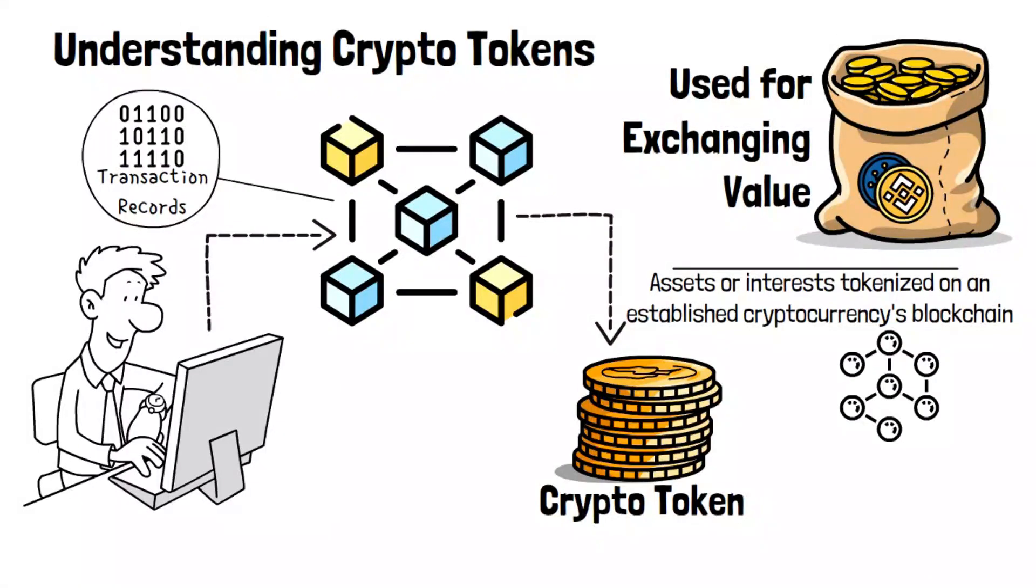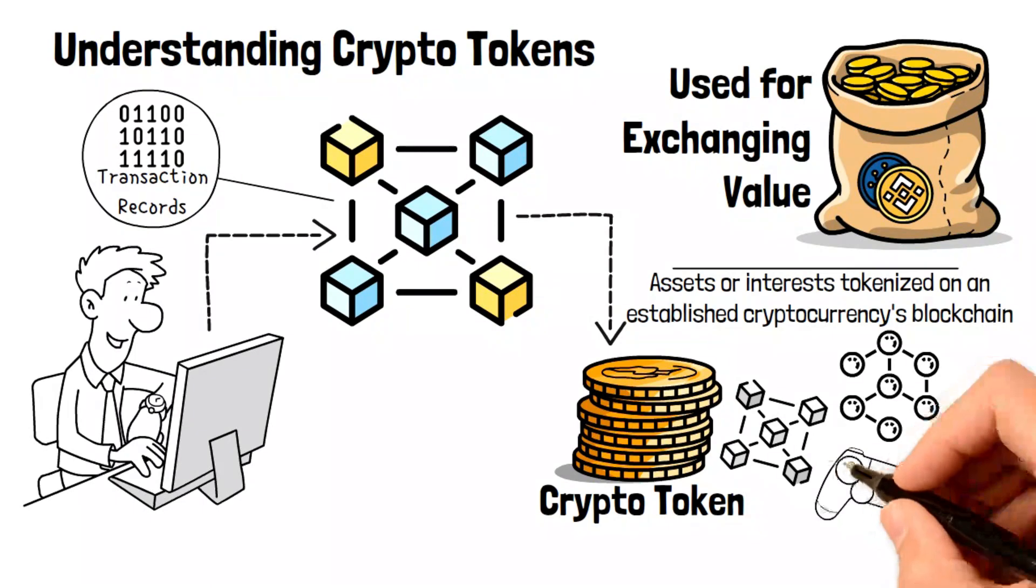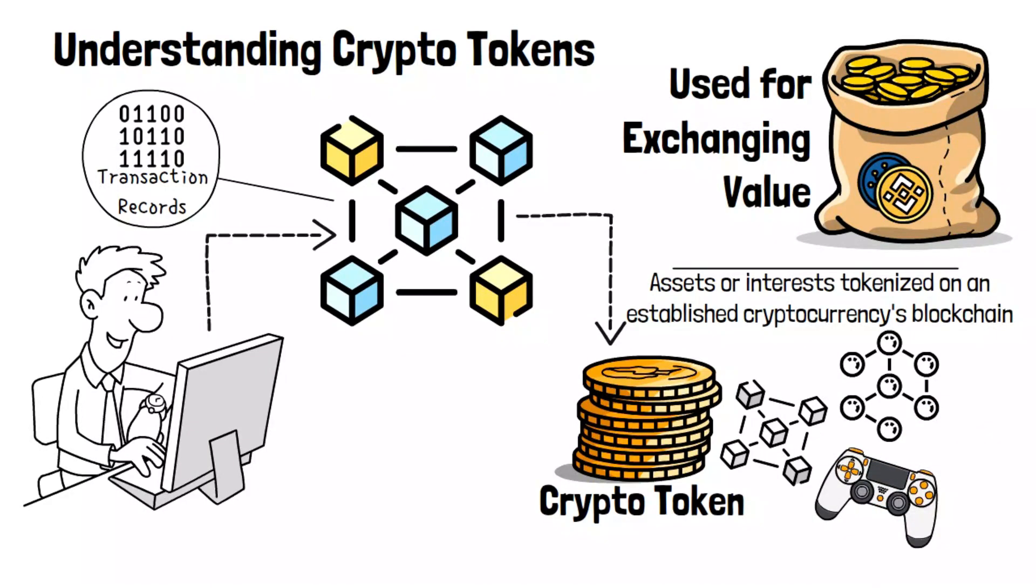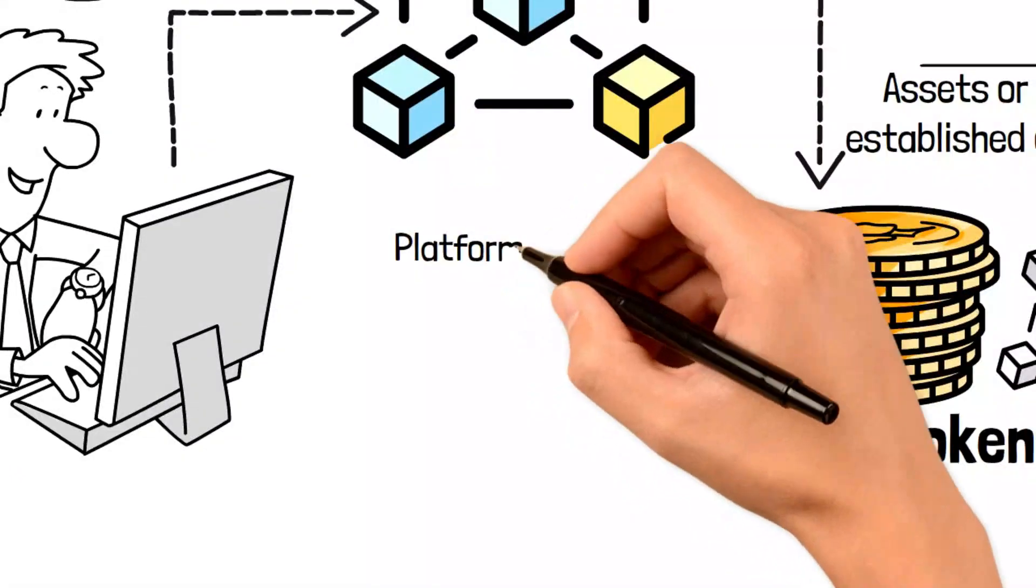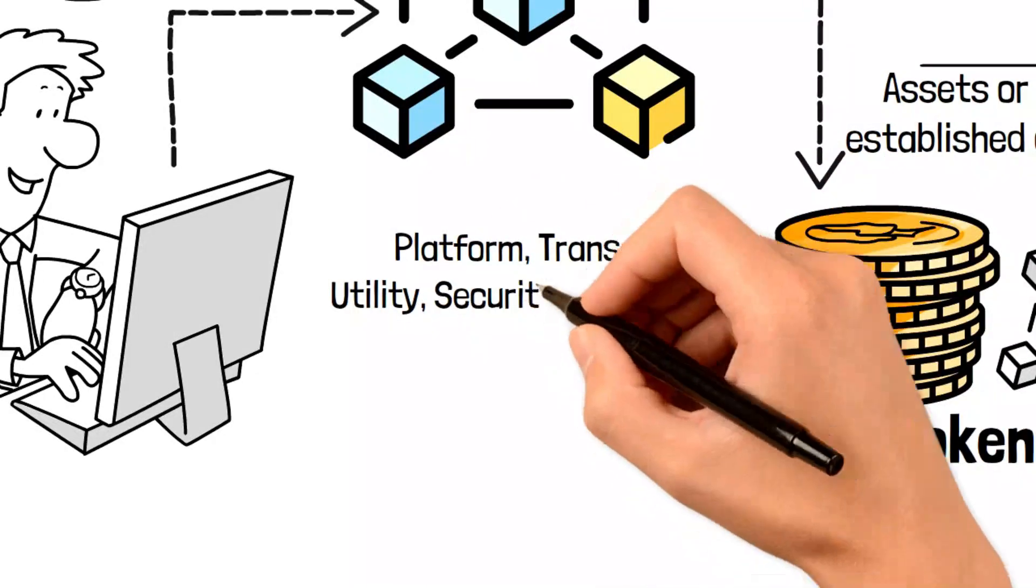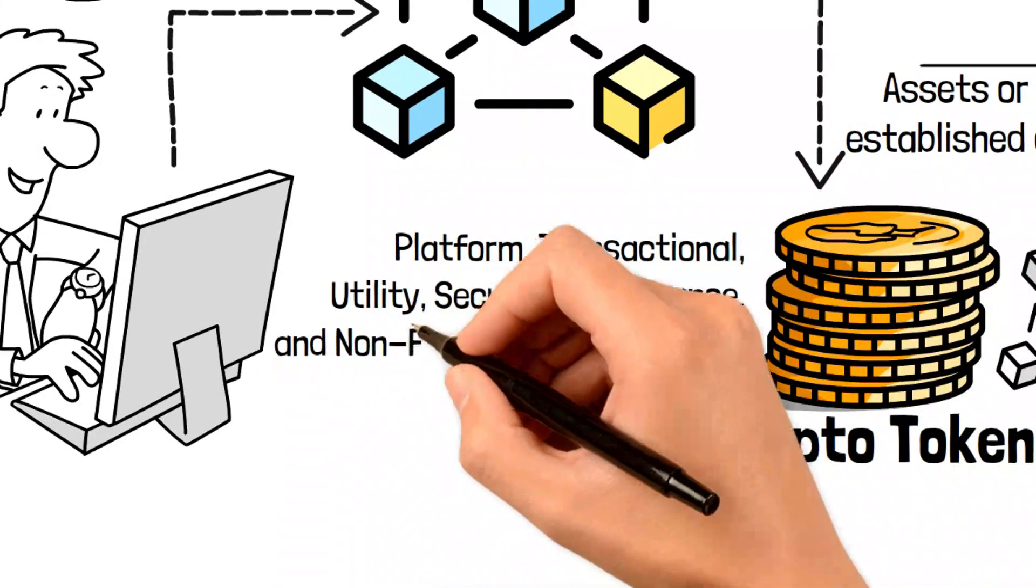These tokens serve various purposes such as enabling DeFi functionalities, offering blockchain-specific services, or even being used in games. Depending on the blockchain they operate on, there are different types of crypto tokens, each with unique properties and use cases including platform, transactional, utility, security, governance, and non-fungible tokens, or NFTs.